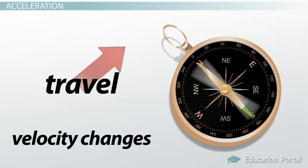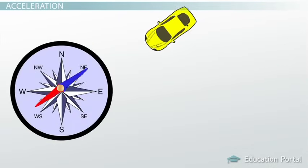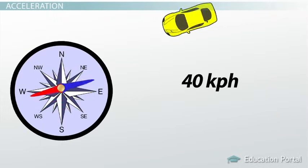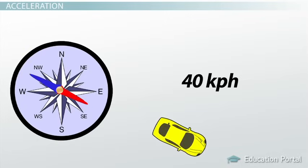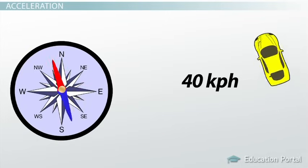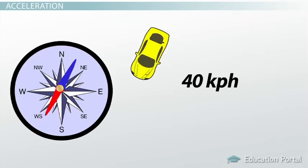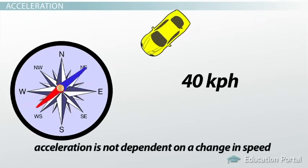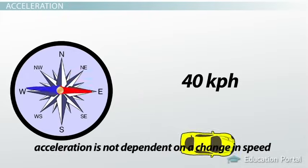Picture setting the cruise control in the car at 40 kilometers per hour and driving in a circle. Speed is constant, 40 kilometers per hour, but velocity changes every time you change direction. Since velocity is changing, you can calculate acceleration even though the speed is constant. Acceleration is not dependent on a change in speed.